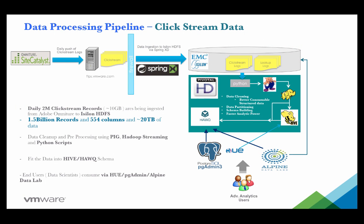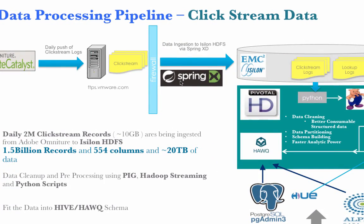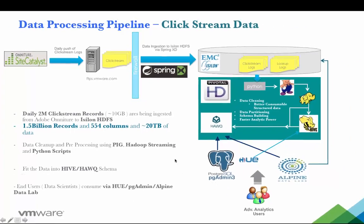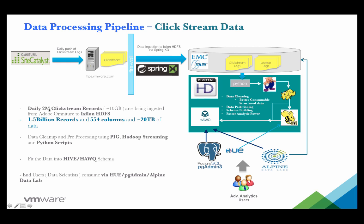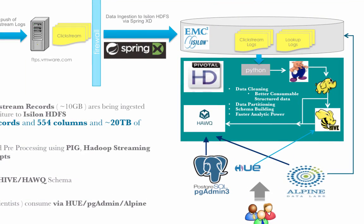Now I will show you the data processing pipeline for one single data source: clickstream data. Clickstream data comes every day from Omniture to our FTP server at vmware.com, and then the data flows from the FTP server to our Isilon HDFS through the Spring HD SFTP module. The data rate is pretty high — we get around 10 GB of data every day, which is basically 2 million clickstream records. Right now we have around 2 years of data, which is 1.5 billion records with 554 columns per record. We take those logs, do some preprocessing and cleaning via Python scripts, Pig, and MapReduce, and then make the data available in Hive database, as well as some important datasets available in HAWQ internal tables.